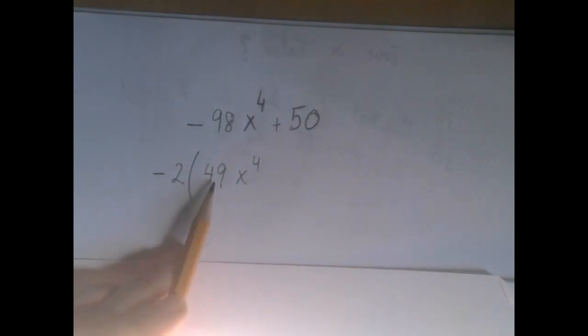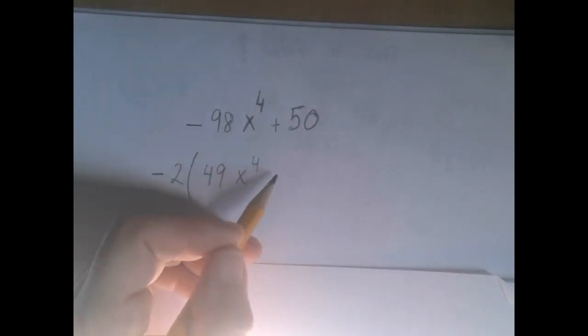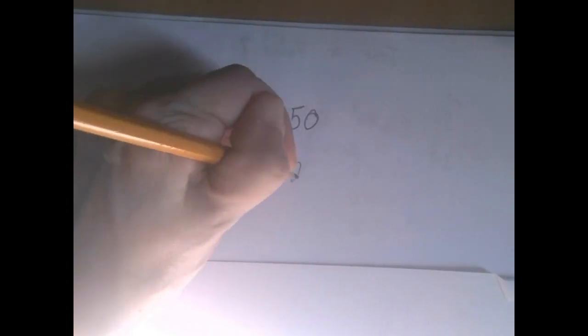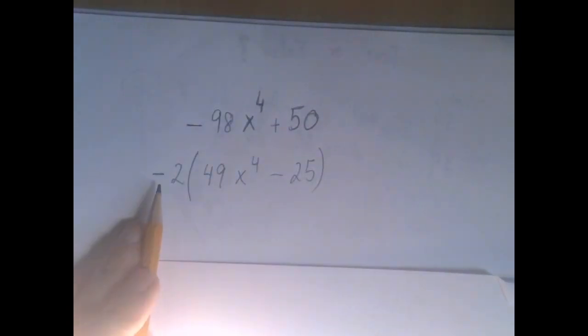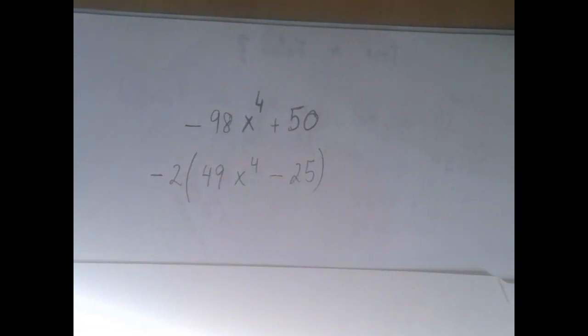But this sign here is not plus, because negative 2 times plus 49 will give us back the negative 98, and here we're going to have a negative 25, because minus 2 times minus 25 will give us that plus 50.